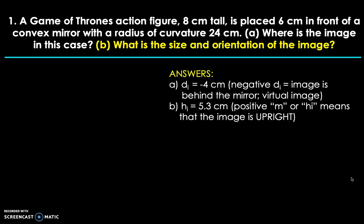Now, summarizing the answers: for part A, we have d_i equals negative 4. And once again, negative d_i means the image is a virtual image, so the image is 4 centimeters behind the mirror. Image height is 5.3 centimeters, that's the height of the image. And the positive sign means that the image is upright.